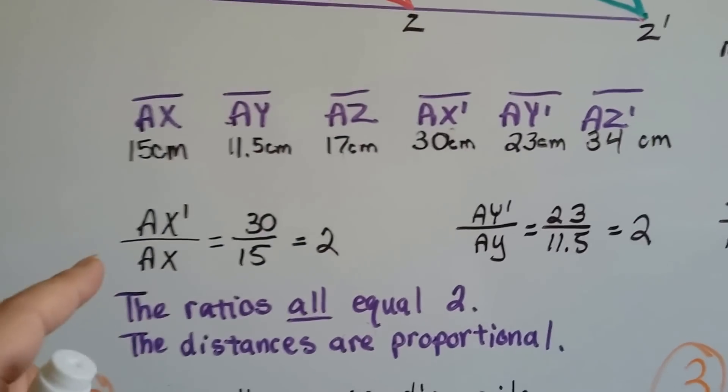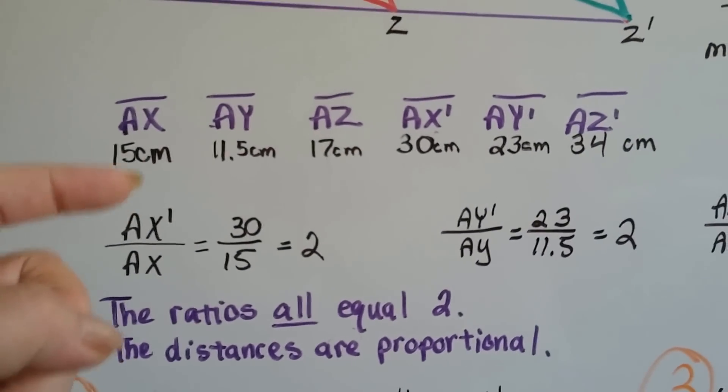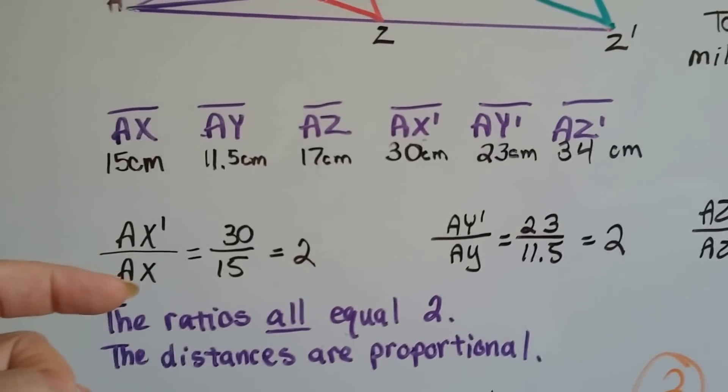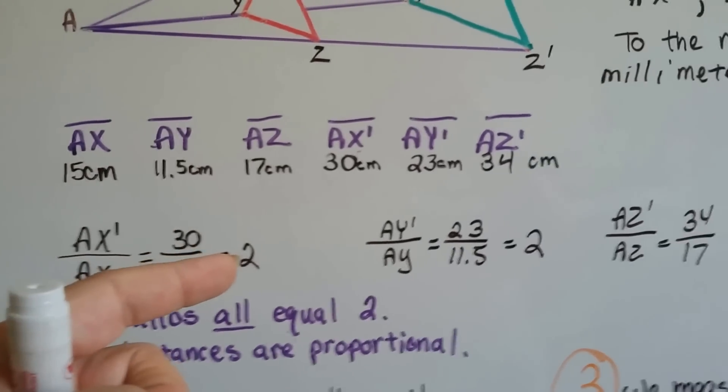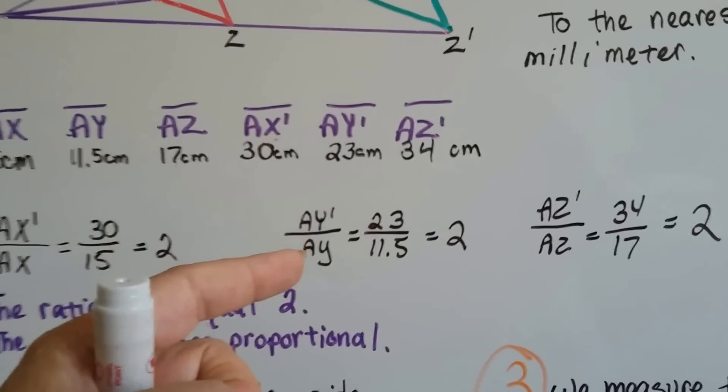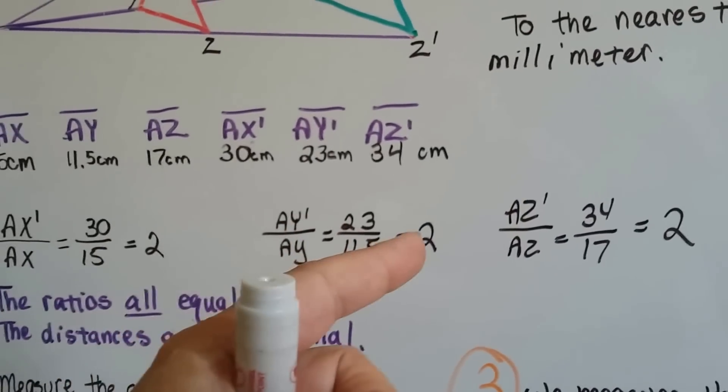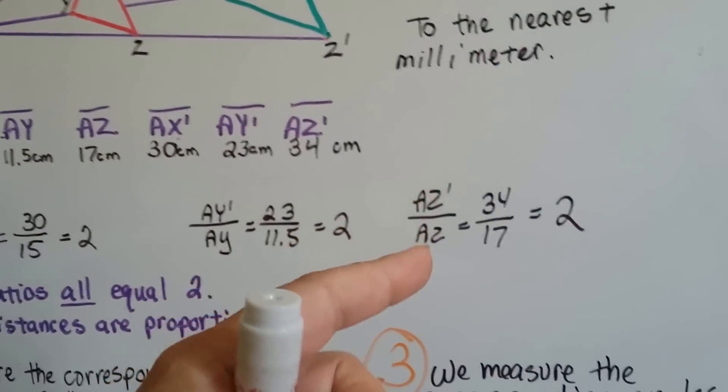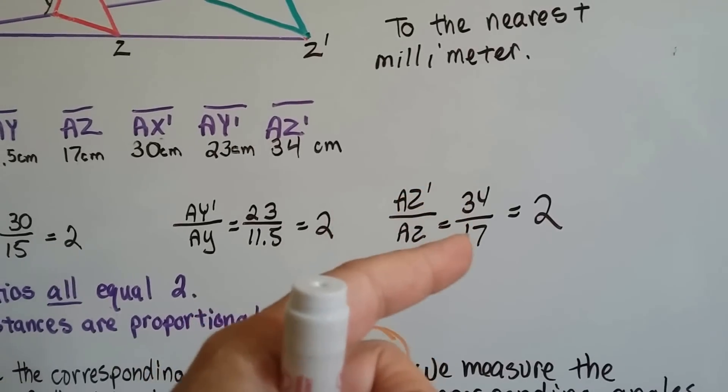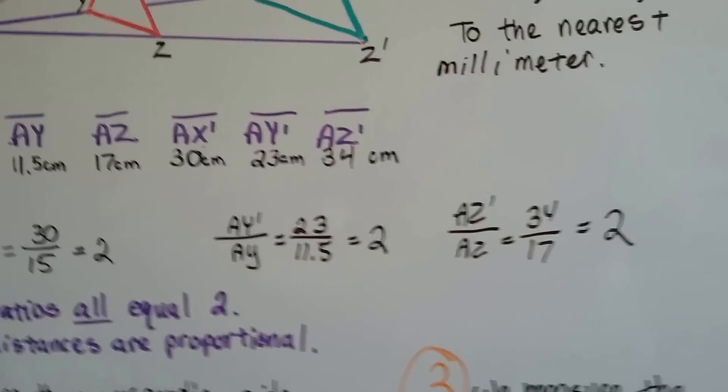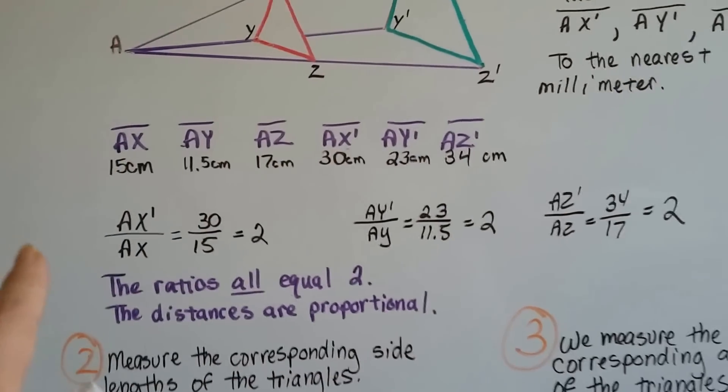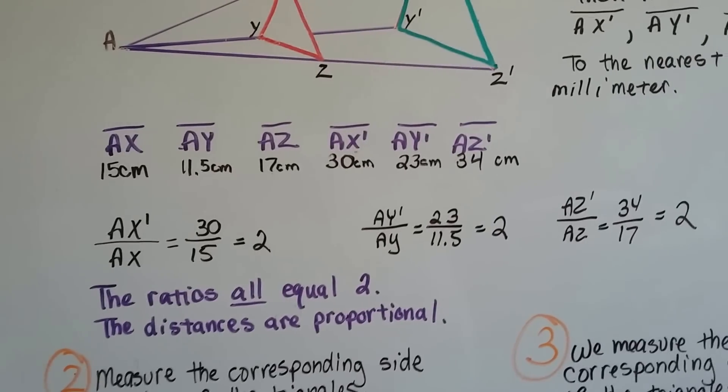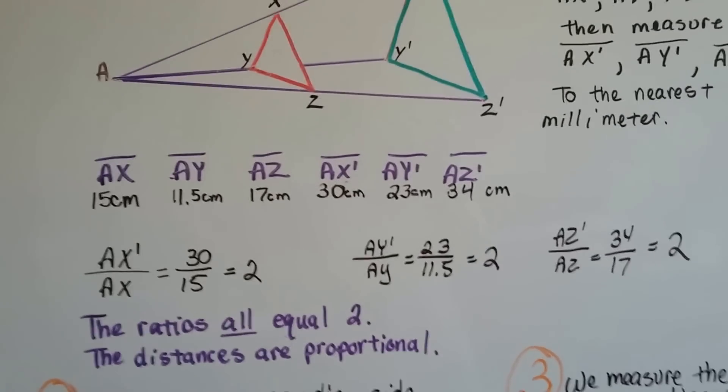When we write them as fractions, AX prime over AX is 30 over 15. That equals 2. AY prime over AY is 23 over 11.5. That equals 2. And AZ prime over AZ equals 34 over 17. That's also 2. It was all in proportion, wasn't it? The ratios of all of them equal 2. The distances are proportional.